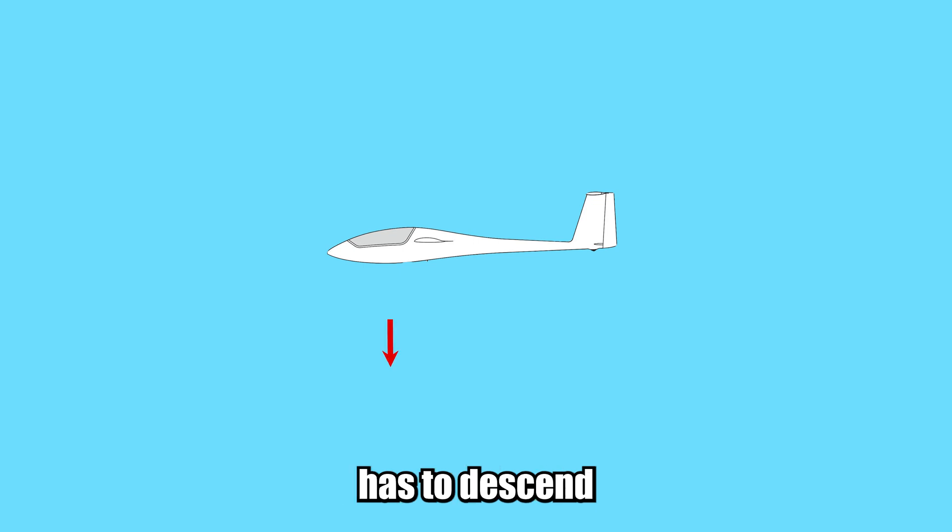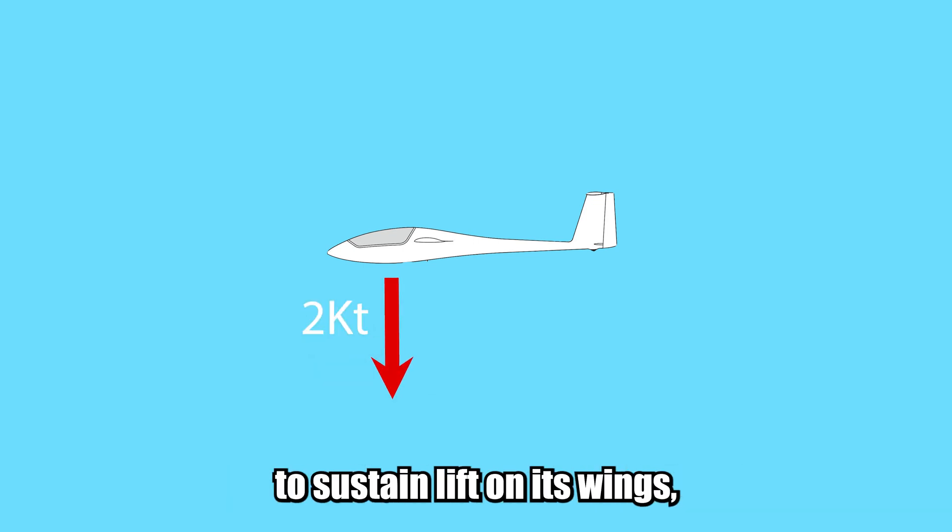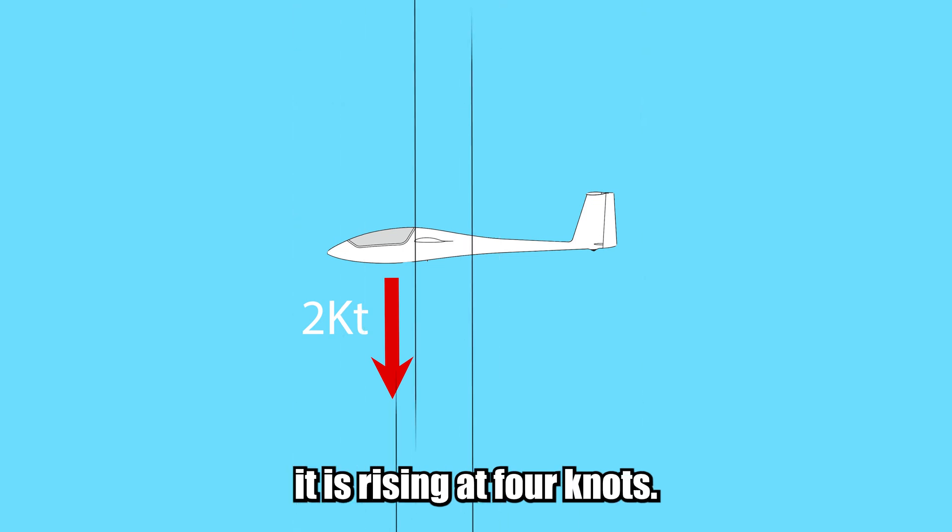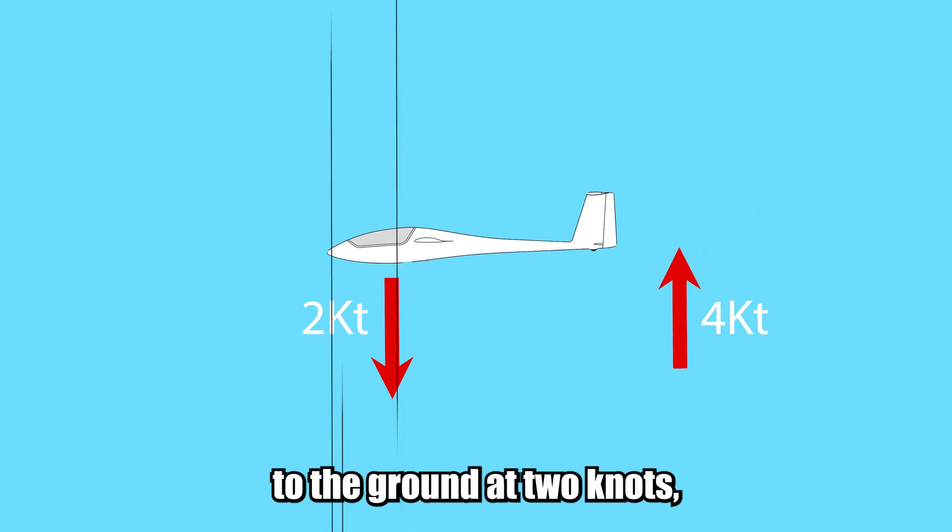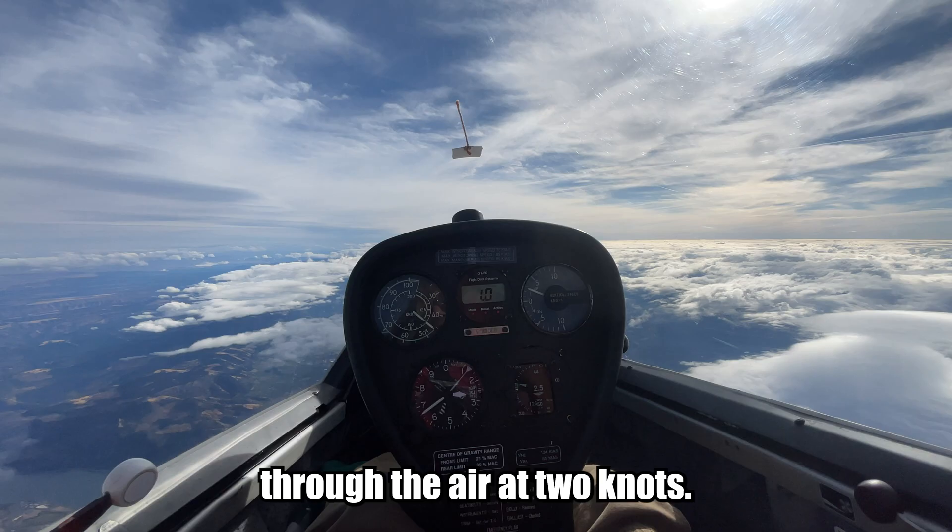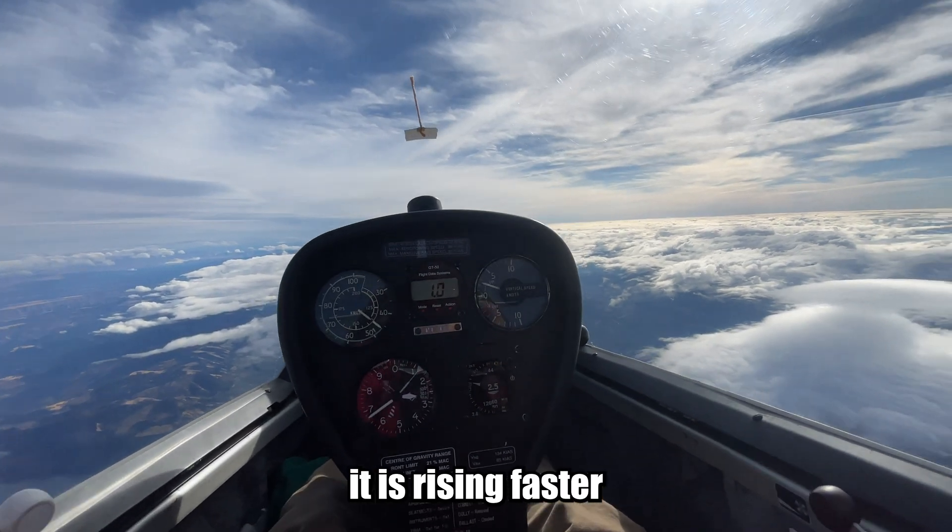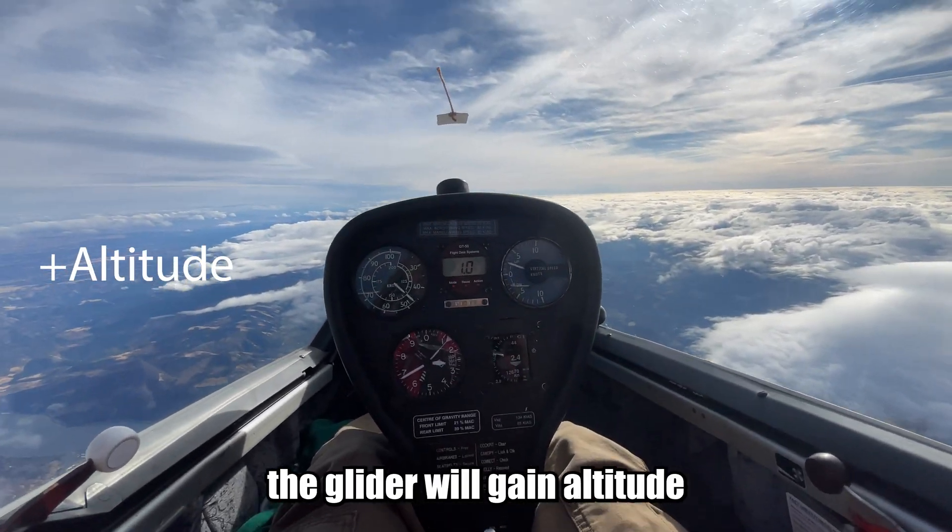Let's say our example glider has to descend at a rate of 2 knots through the air to sustain lift on its wings, but the air around it is rising at 4 knots. The glider is then rising relative to the ground at 2 knots, but is still descending through the air at 2 knots. As long as the air around it is rising faster than it is descending, the glider will gain altitude and therefore energy.